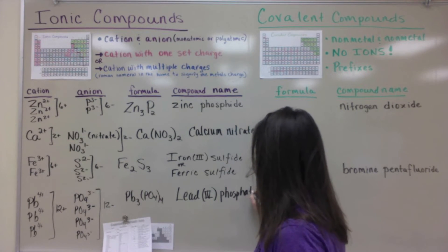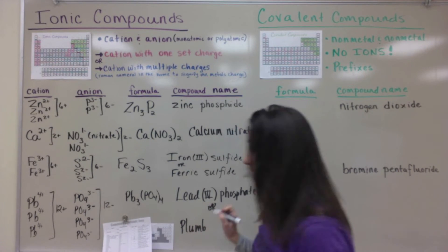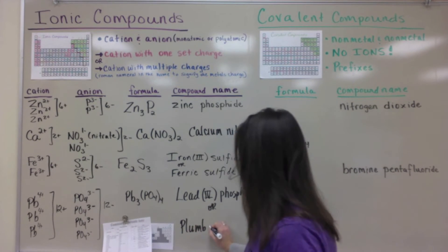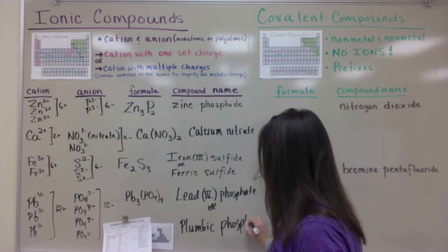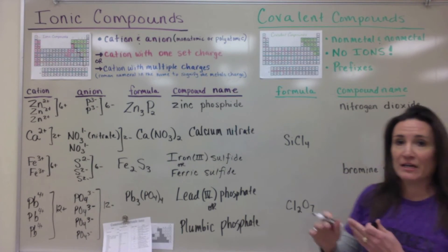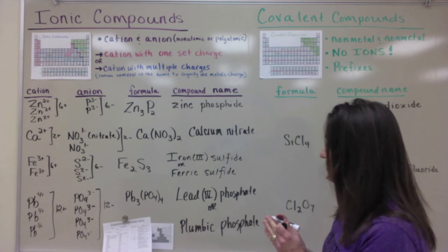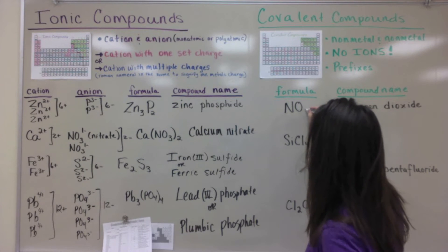You could use Latin naming and for this case you would say plumb and then ic is the higher of the two charges and ous is the lower. But we have 4+ which is the higher charge so you'd say plumbic phosphate. When you move on to covalent there are no ions, there's no polyatomic ions to memorize. You just look at the two non-metals that are in the formula and prefixes will tell you how many you have.